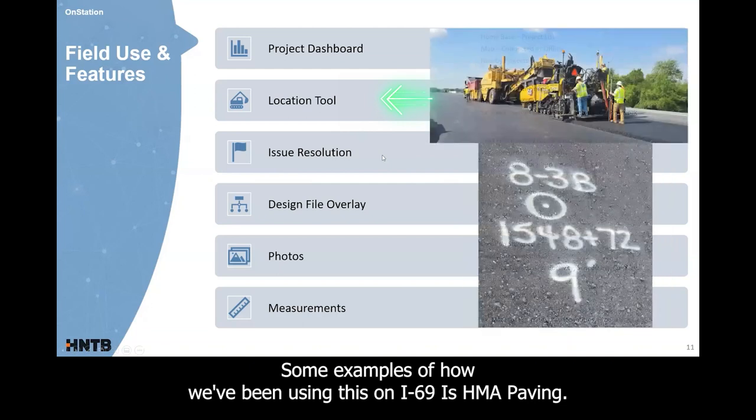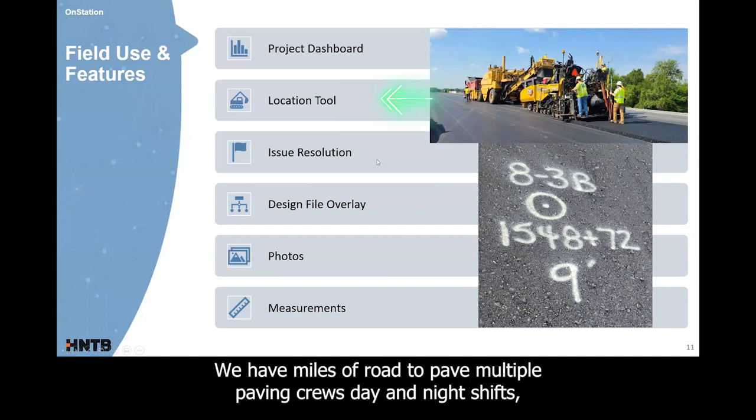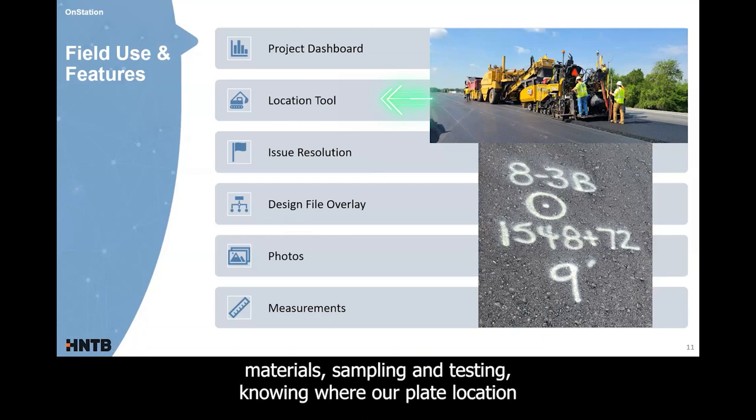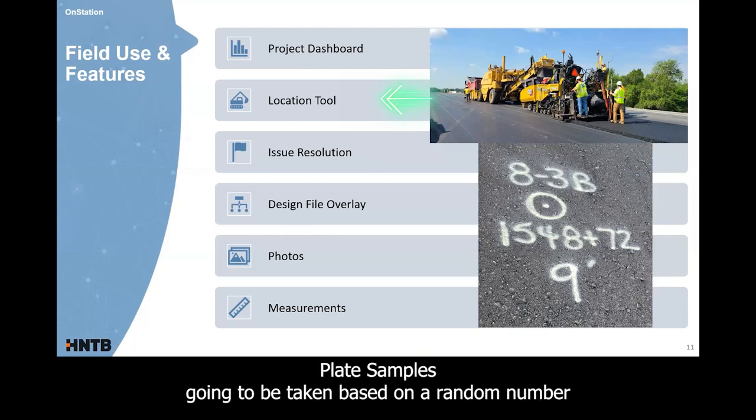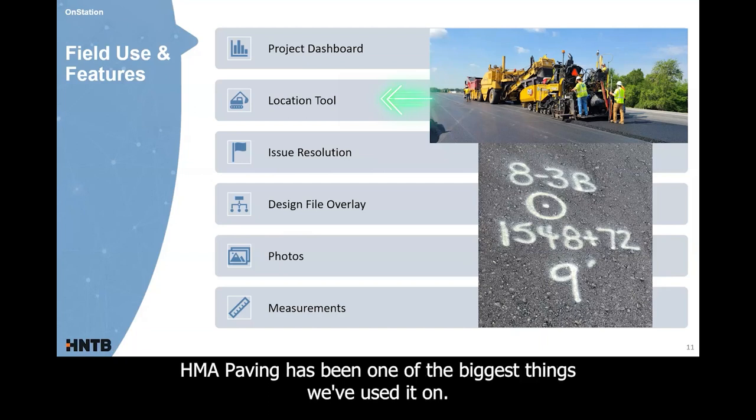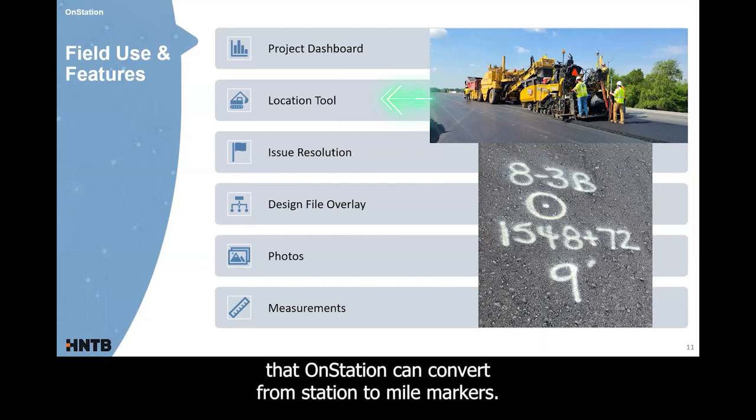Some examples of how we've been using this on I-69 is HMA paving. This has been a tremendous help for our paving operations. We have miles of road to pave, multiple paving crews, day and night shifts. And this has been extremely helpful in tracking locations of tickets, doing lay rates, material sampling and testing, knowing where our plate location is going to or plate sample is going to be taken based on a random number, marking the area where the core is going to be. And you write down that station, then you're able to come straight back to it to actually mark the core out for it to get cut by the contractor. That's been extremely helpful in the field. HMA paving has been one of the biggest things we've used it on. We've also used it on maintenance for pothole tracking. INDOT wants their potholes to be tracking mile markers, which is super beneficial that OnStation can convert from station to mile markers. So we utilize the tool there as well.